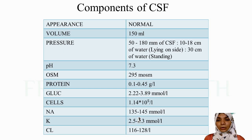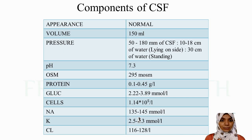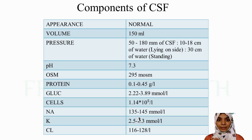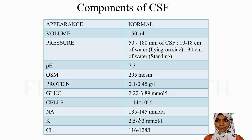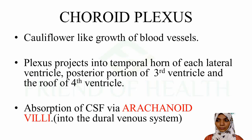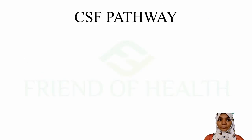Once you are clear about normal CSF components, you can read about abnormal findings - for example, in meningitis of different types, you get different abnormalities. The CSF pathway is also a frequently asked topic, so please make a flowchart as it will be easy for you.